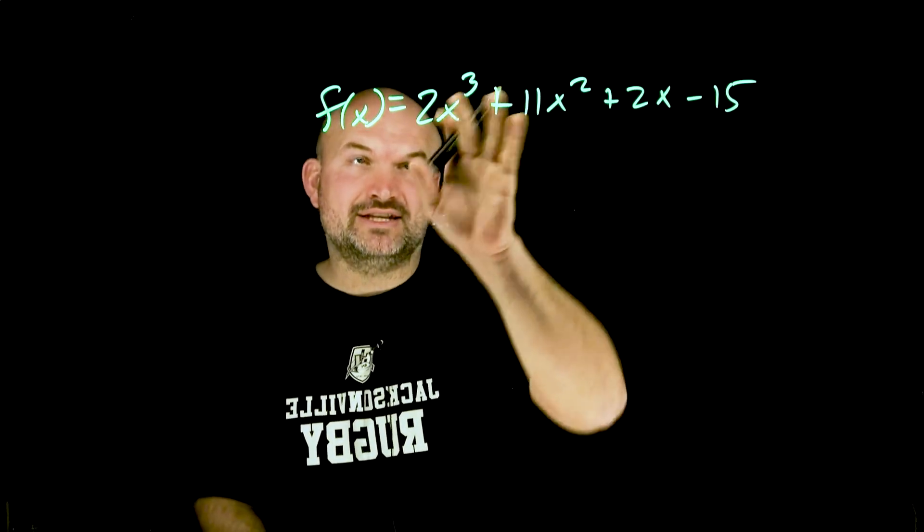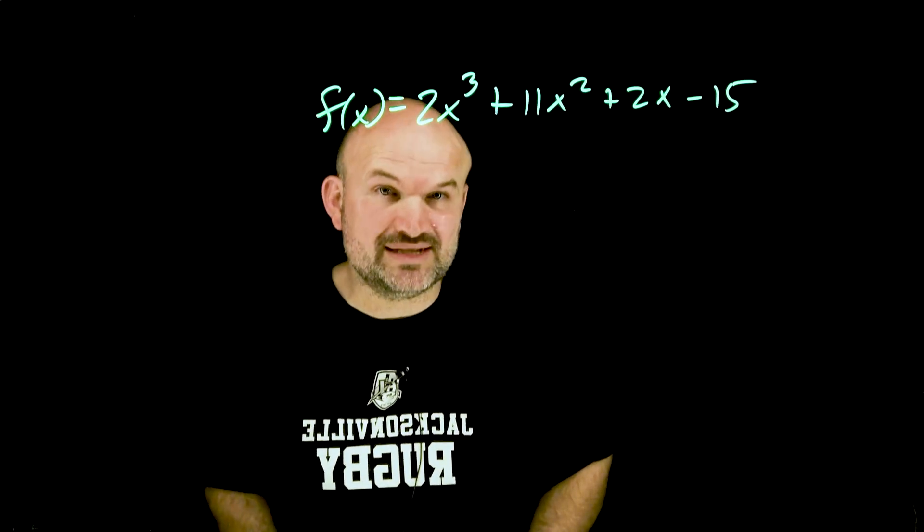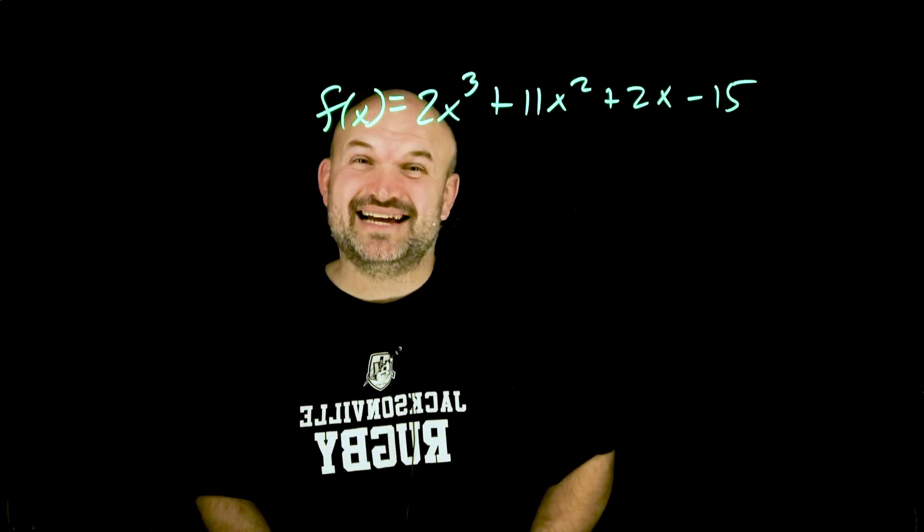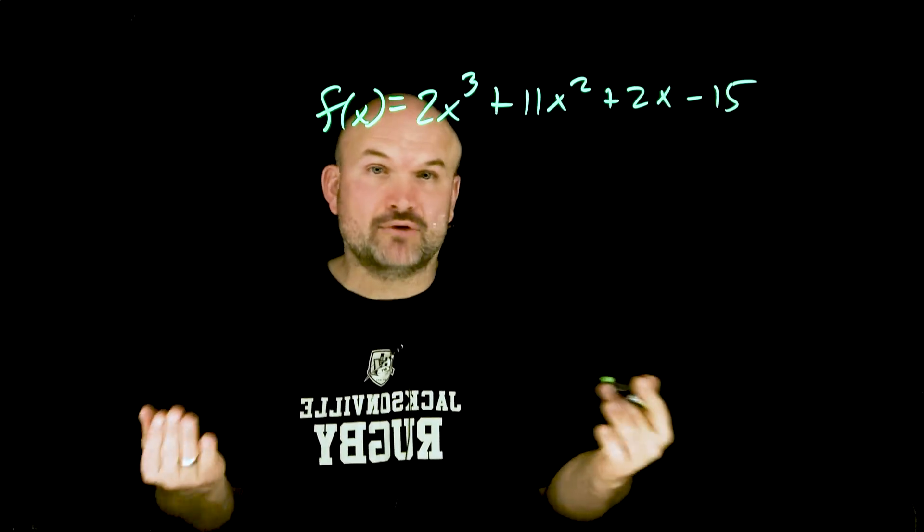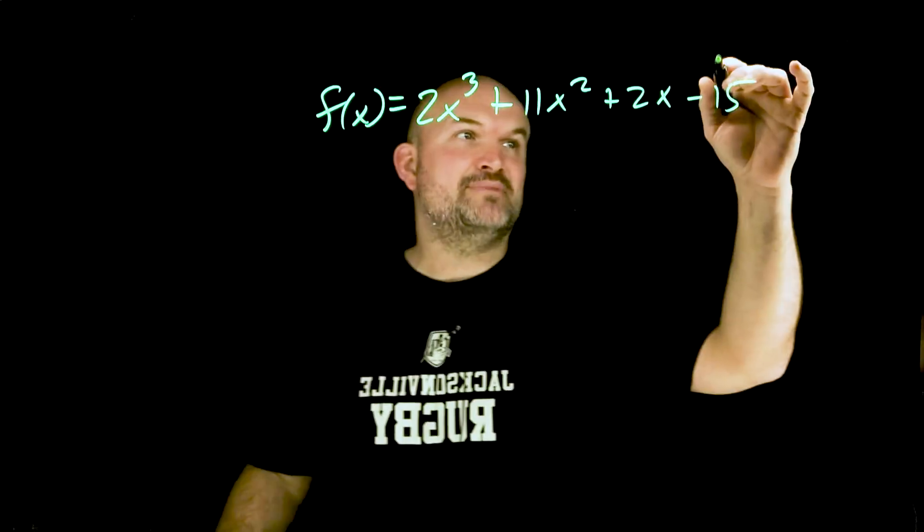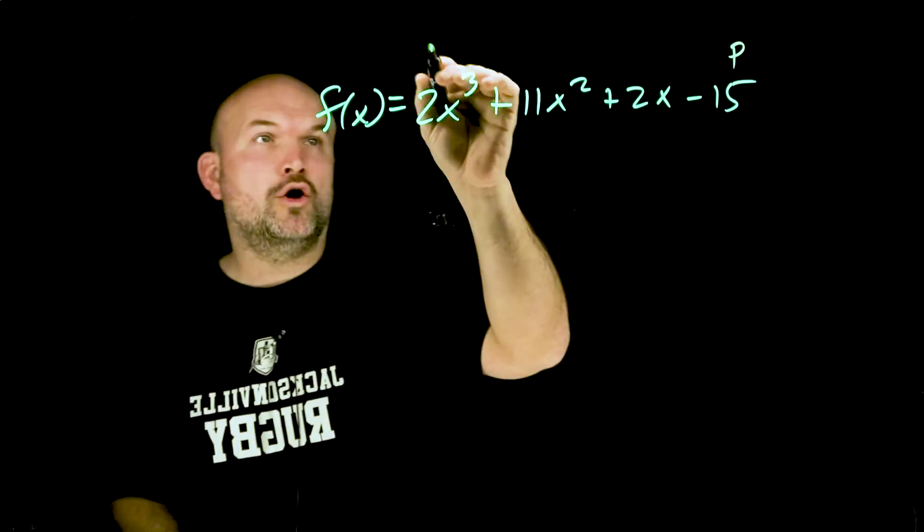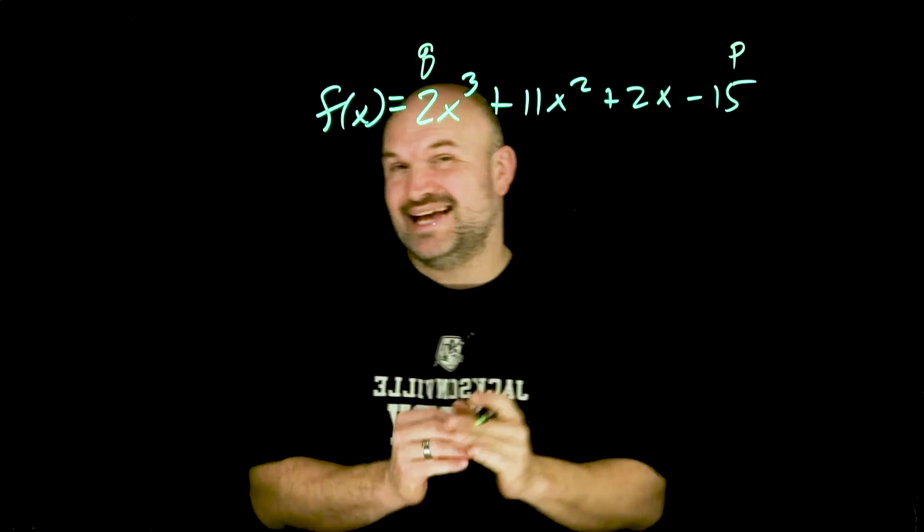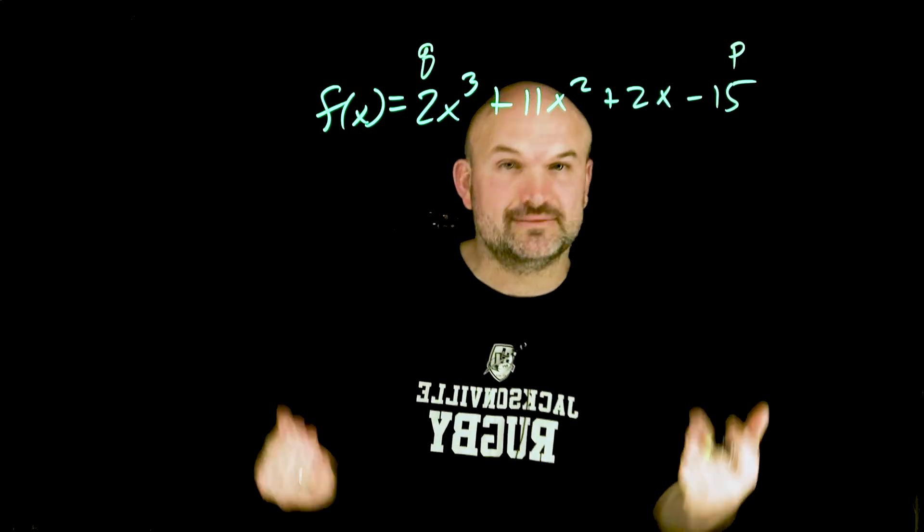We know that by the degree of this polynomial we're gonna have three zeros and one thing we can do is identify the possible list of rational zeros using the rational zero test. The rational zero test is basically taking the factors of your P over your Q plus or minus and that's going to give you a list of possible rational zeros.